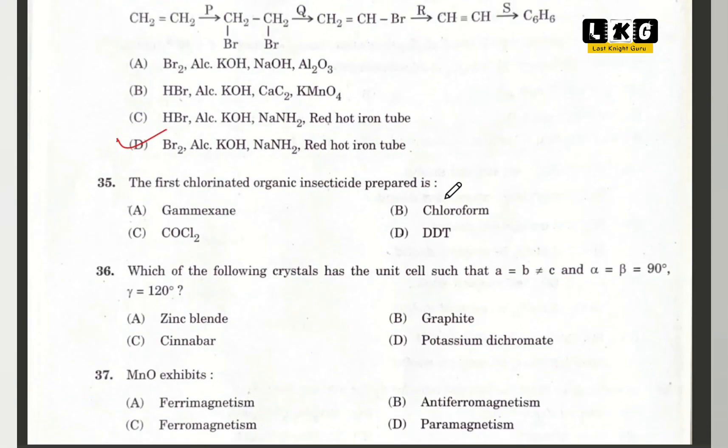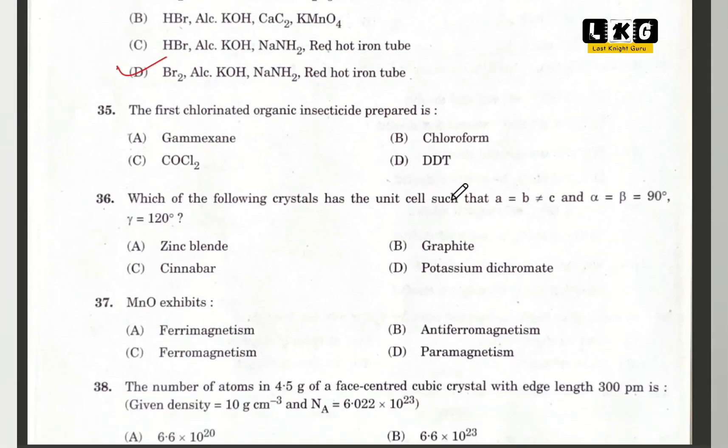Question number 35: the first chlorinated organic insecticide prepared is option D. Question number 36: which of the following crystals has a unit cell such that A = B ≠ C? Option B is correct — graphite.